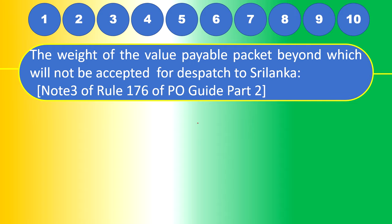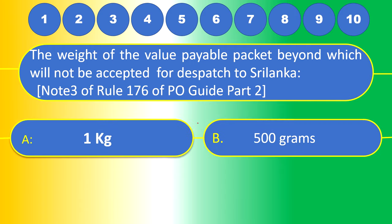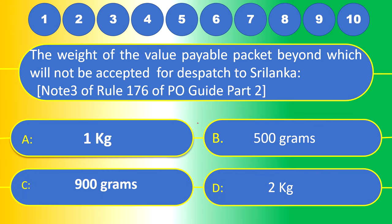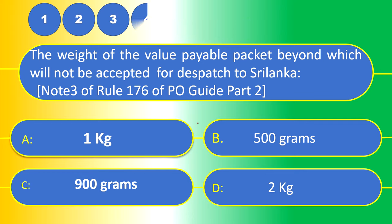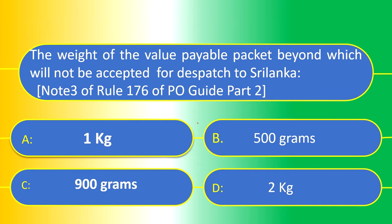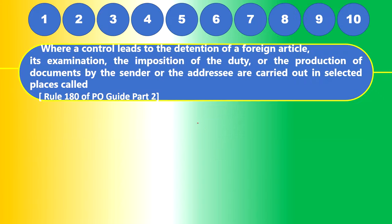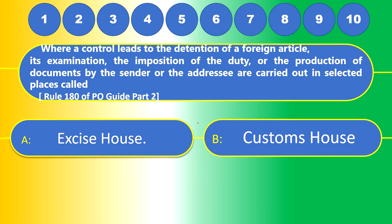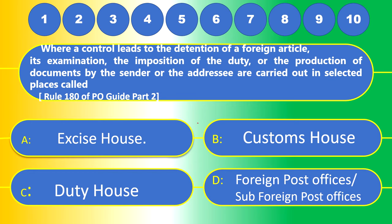The weight of a value payable (VP) packet beyond which it will not be accepted for dispatch to Sri Lanka — Note 3 of Rule 176 of PO Guide Part 2 — options: (a) 1 kg, (b) 500 grams, (c) 900 grams, or (d) 2 kg. The answer is (c) 900 grams — if it is beyond 900 grams it will not be accepted. Next: where control leading to detention of a foreign article, its examination, imposition of duty, or production of documents is carried out, those selected places are called — Rule 180 of PO Guide Part 2 — (d) foreign post offices or sub foreign post offices.